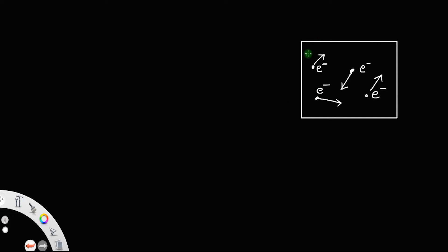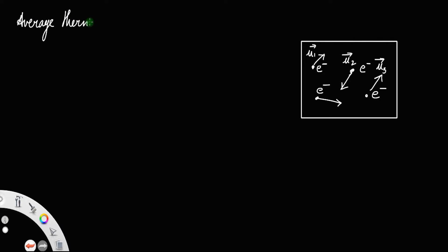Let the individual electron velocities be u1, u2, u3, and so on up to un, where there are n electrons. The average initial velocity, also called the average thermal speed or thermal velocity, is denoted as u-average.